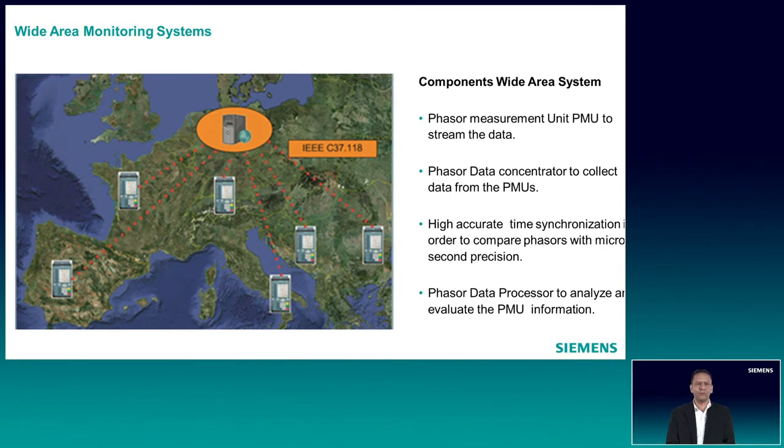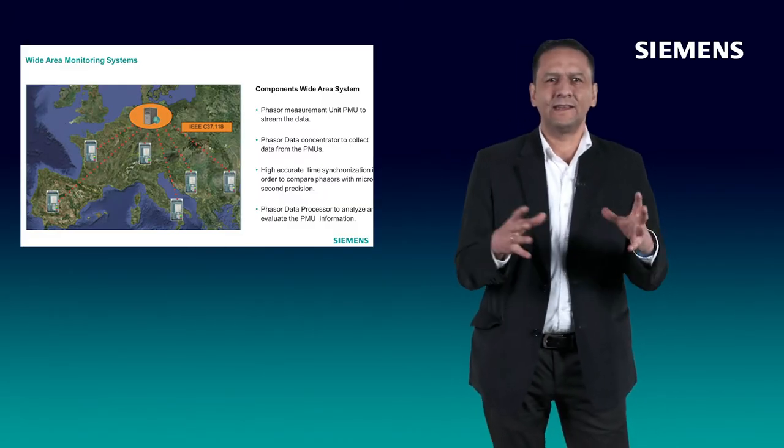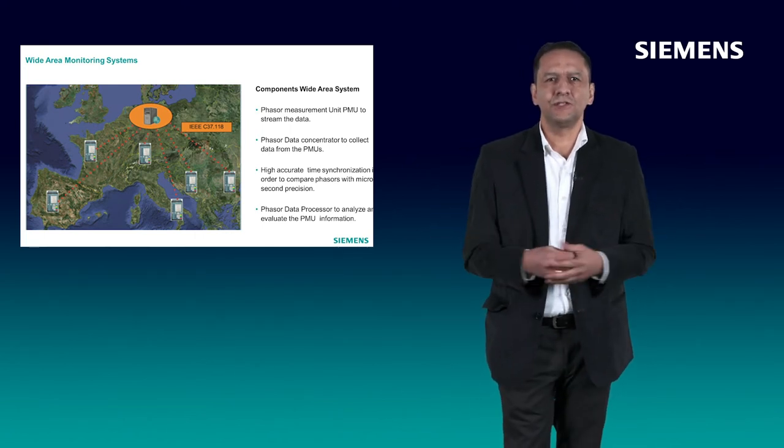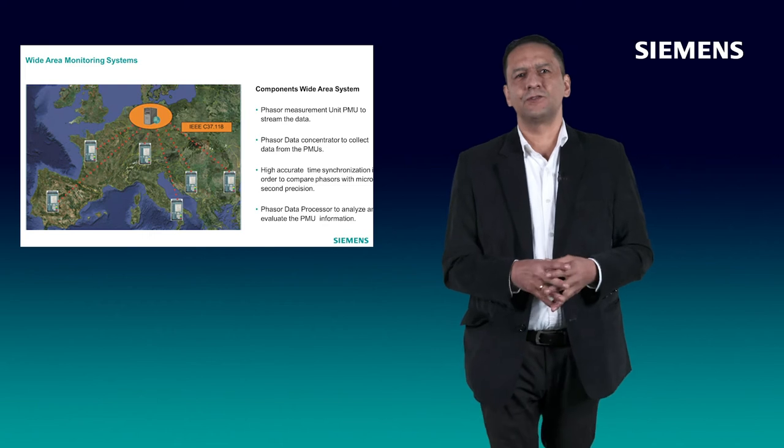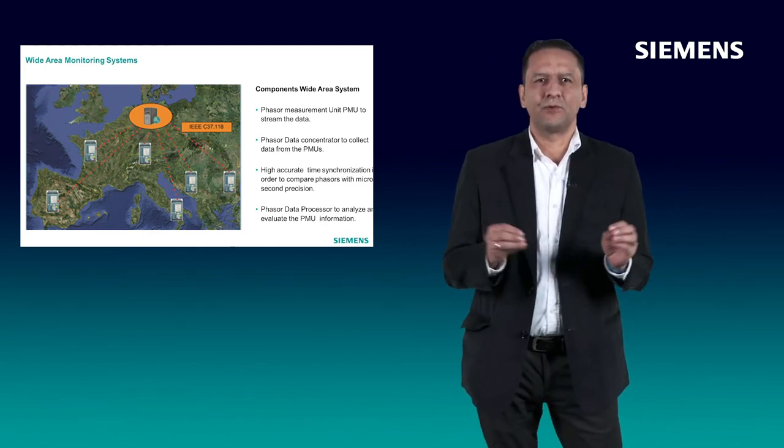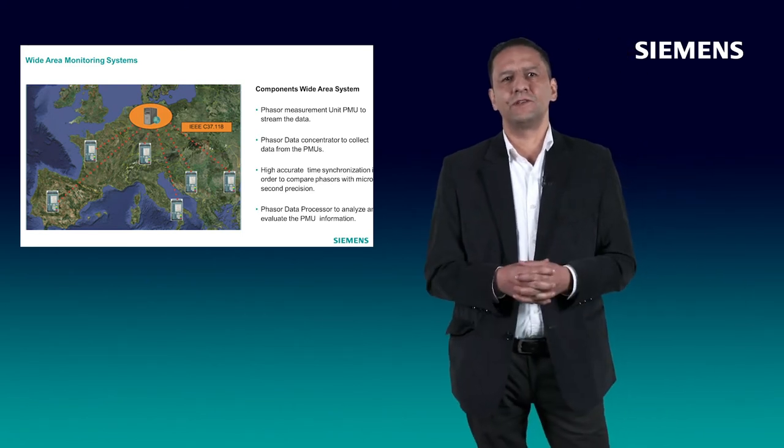The standard protocol is C37.118 and another important aspect is high-accurate time synchronization. The main components are phasor measurement units, so-called PMUs, to stream the data to the central location. Phasor data concentrator to collect the data from the PMUs. High-accurate time synchronization in order to compare phasors with microsecond precision. Phasor data processor to analyze and evaluate the PMU information.